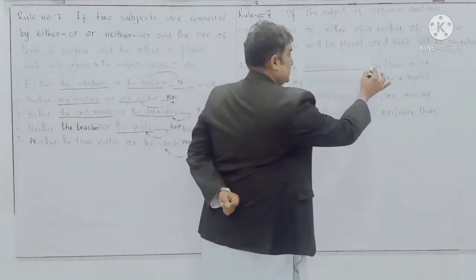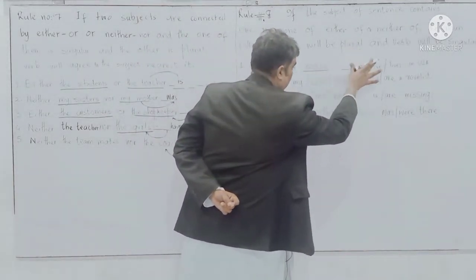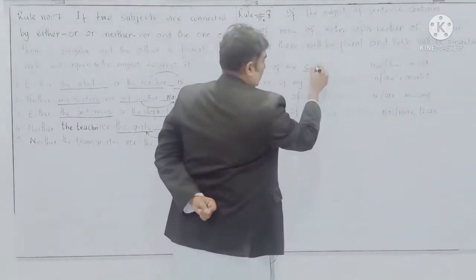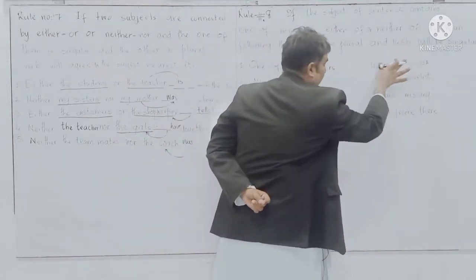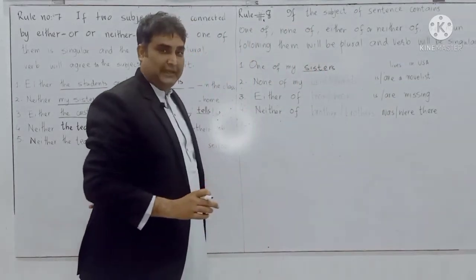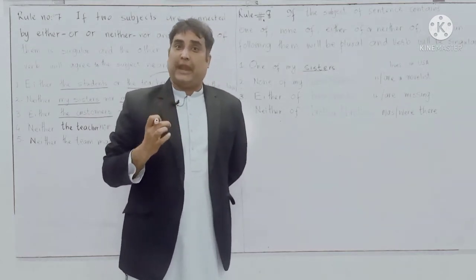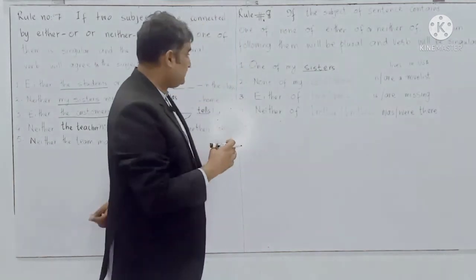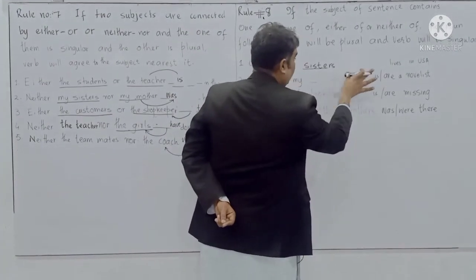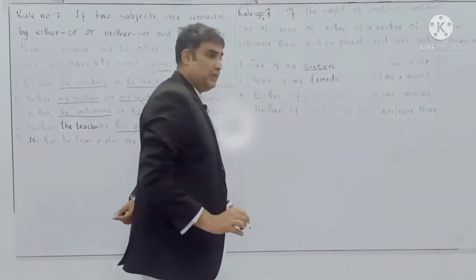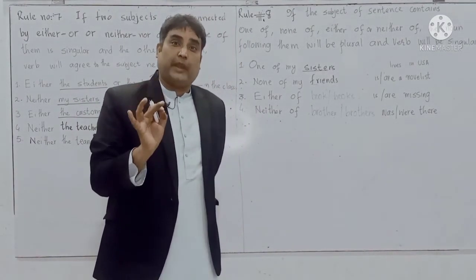Look at the example: 'One of my sisters.' The noun after 'one of' is plural — 'sisters.' When we add S or ES to a verb it becomes singular, and when we add S or ES to a noun it becomes plural. So 'one of my sisters' — noun is plural. Similarly, 'none of my friends,' 'either of books,' 'neither of my brothers' — the noun after 'one of,' 'none of,' 'either of,' and 'neither of' will always be plural.